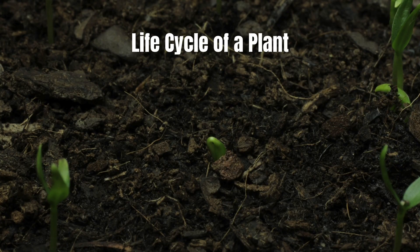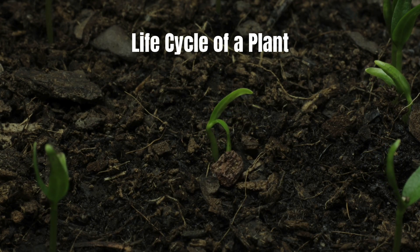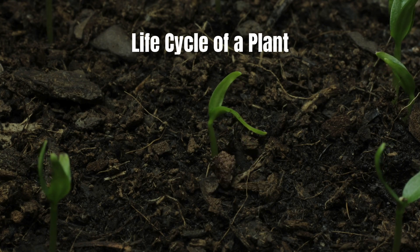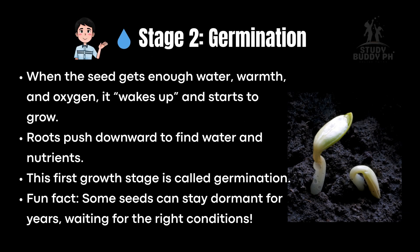Life cycle of a plant: just like animals, plants have an incredible life cycle — a series of stages that repeats so new plants can grow. The life cycle begins with a seed. Inside each seed is a tiny baby plant called an embryo, packed with nutrients, with a seed coat for protection. When the seed gets enough water, warmth, and oxygen, it wakes up and starts to grow. Roots push downward to find water and nutrients. This first growth stage is called germination. Fun fact: some seeds can stay dormant for years, waiting for the right conditions.